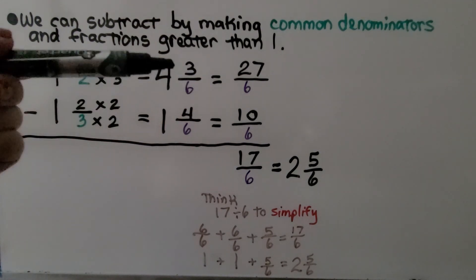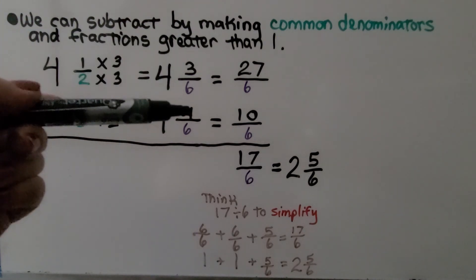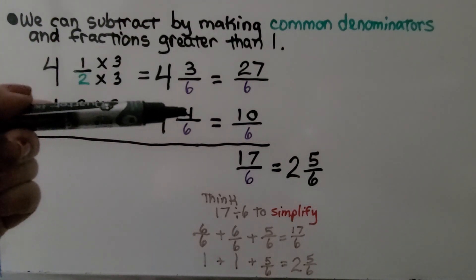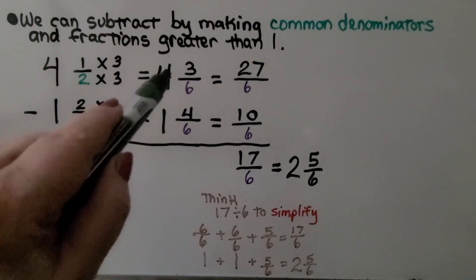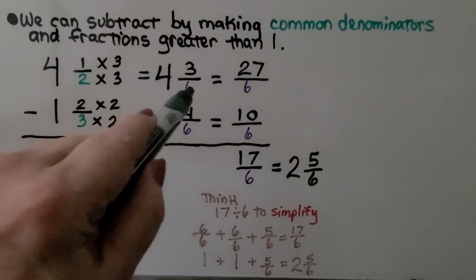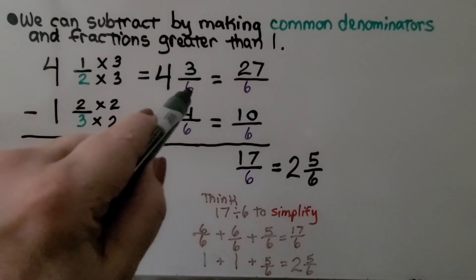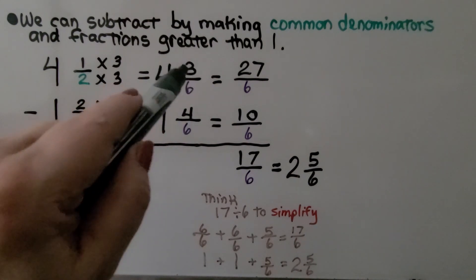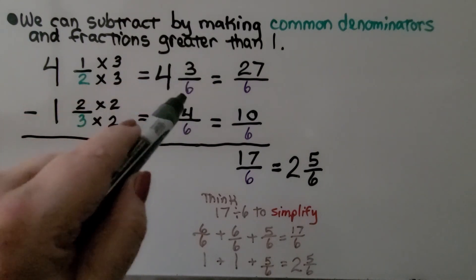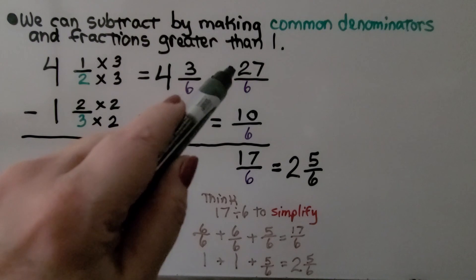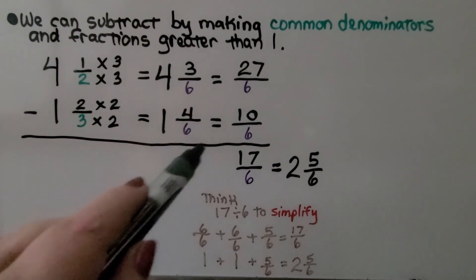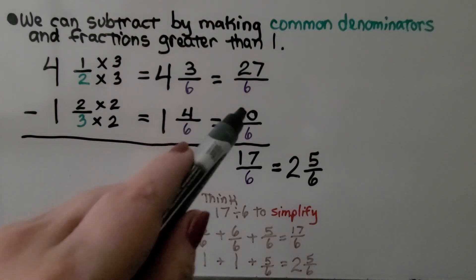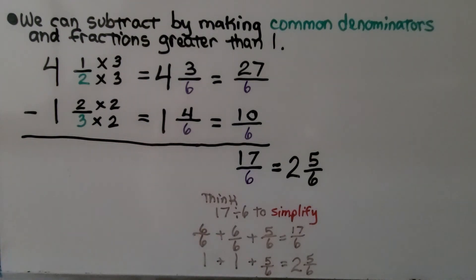So now when we look at the numerators, we have a 3 minus a 4. We don't have enough to take 4 away. What we could do is turn it into a fraction greater than 1. We do, if you remember, the whole number 4 times the denominator. That's 24. And then we add the numerator. 25, 26, 27. We put it over that denominator. We have 27/6. Here we would do 1 times 6 plus 4. That's 6 and 4 more. That's 10 written over that denominator. We have 10/6.